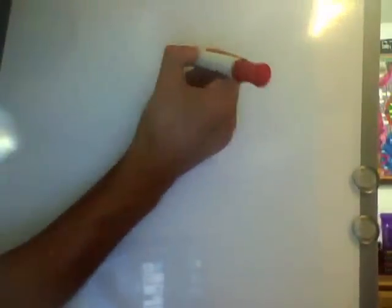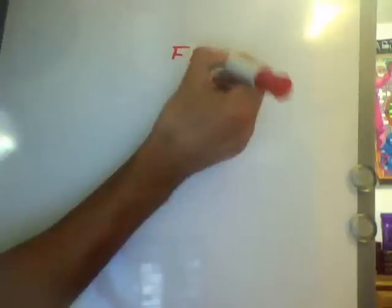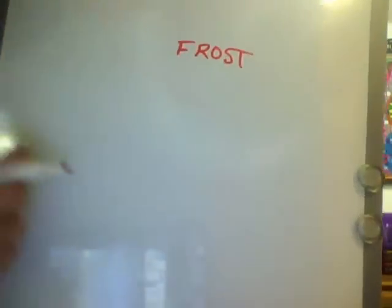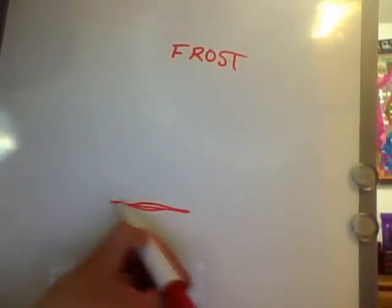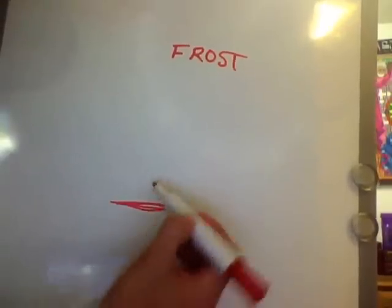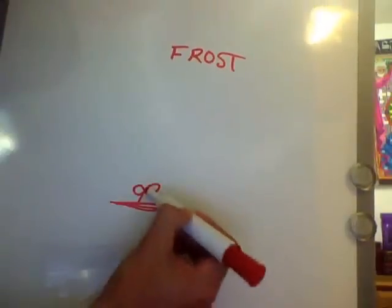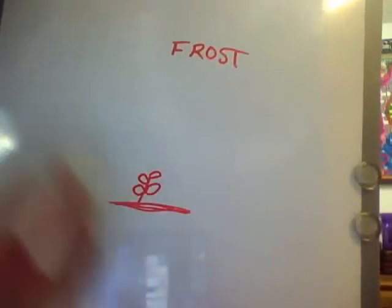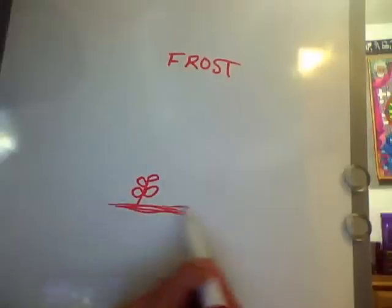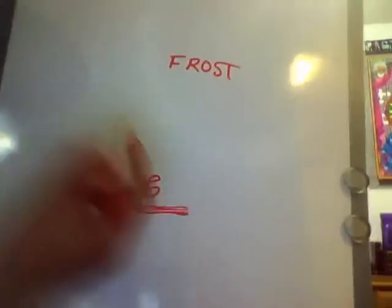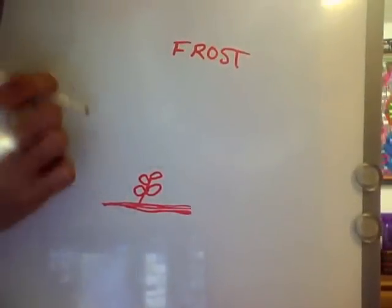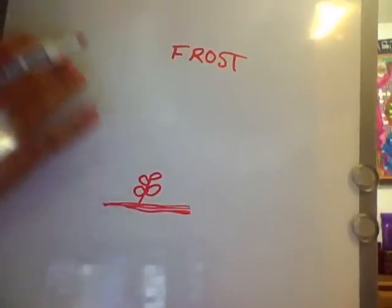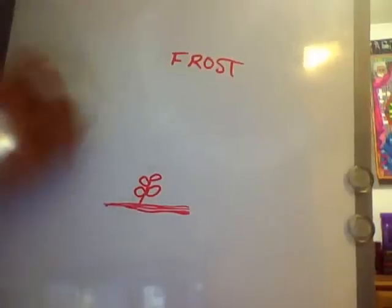Let us consider frost. Now, in order to get frost, let us pretend this is our ground level. We have some plants or something. Now, in order for there to be frost, there must be an increase in the atmosphere's temperature. It must reach a certain amount of warmth and a certain temperature of warmth.